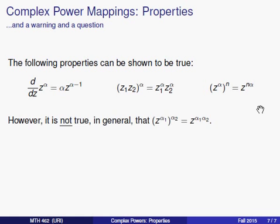However, and this is where the warning comes in, it's not true, perhaps surprisingly, perhaps not, that when you have a complex exponent inside of another complex exponent, that you can times the two complex exponents together. In general, the left-hand side will not equal the right-hand side, and your homework will take a look at an example where that is the case.